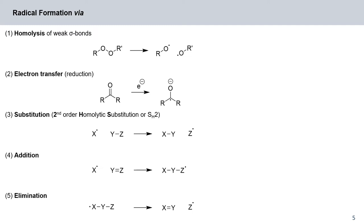Then we can generate radicals by electron transfer or reduction. Here we are essentially picking up an electron and cleaving this double bond to generate from our ketone a ketyl radical.